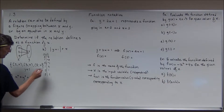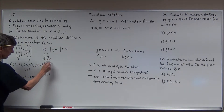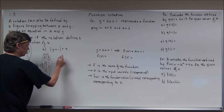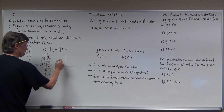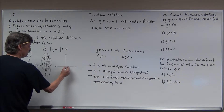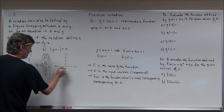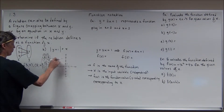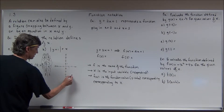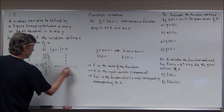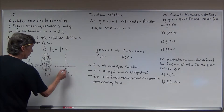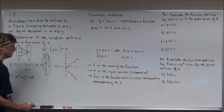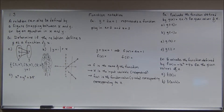I can see right away that some ordered pairs have the same x-value but different y-values. If I sketch this out — freehand — I get a kind of sideways V-shape. You can see it fails the vertical line test, so no, this is not a function. It's a relation, but not a function.